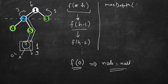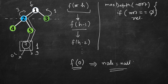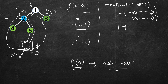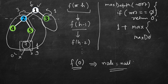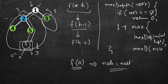Now this problem is clear. Let's write the maxDepth function given a root. The base case is: if root is equal to null, return 0. Otherwise, return 1 plus the maximum of the two subtrees — whichever is max — plus 1 for the root itself. So: return 1 plus max of maxDepth(root.left) and maxDepth(root.right). That's it, our recursion function is complete.